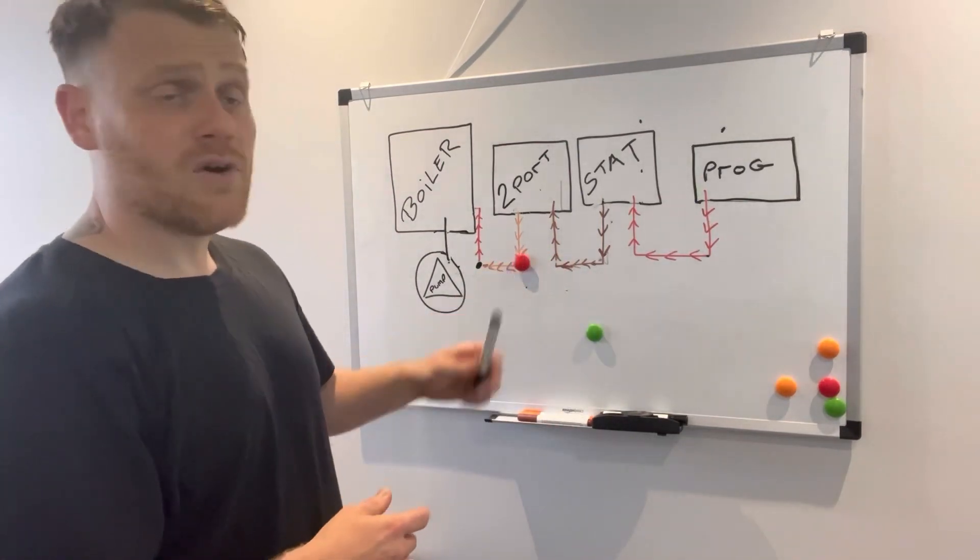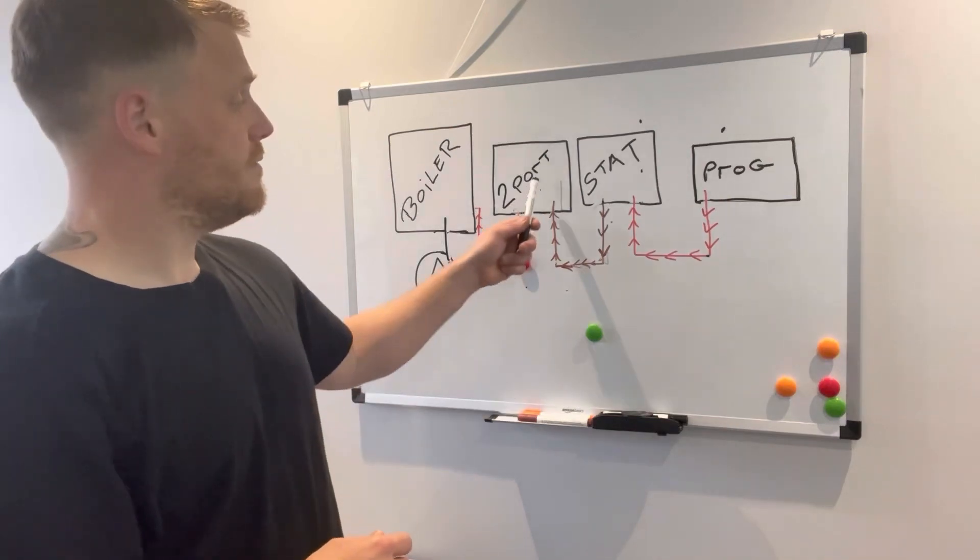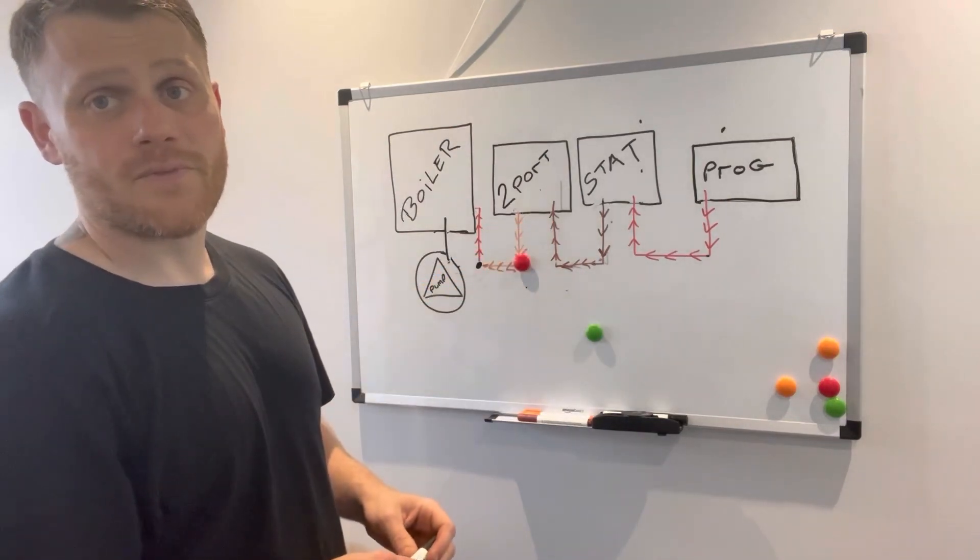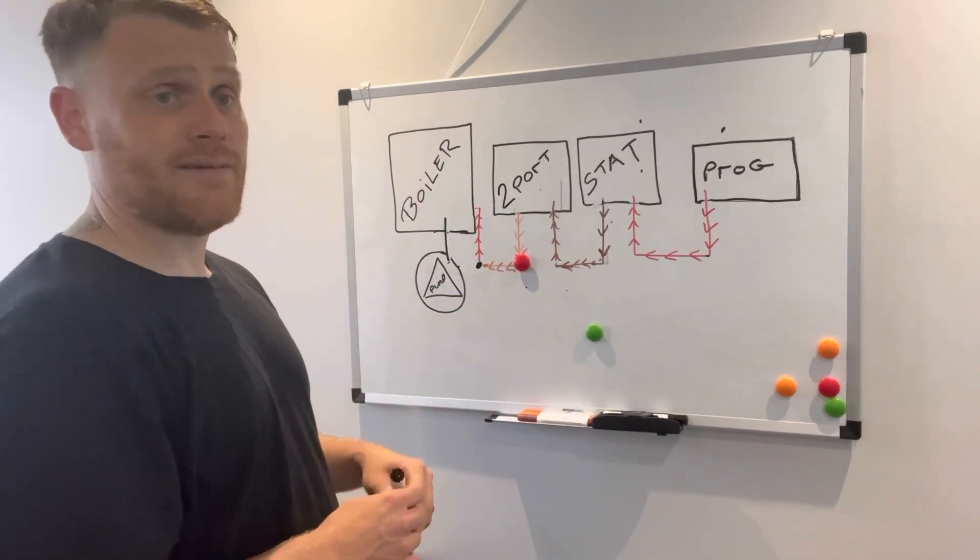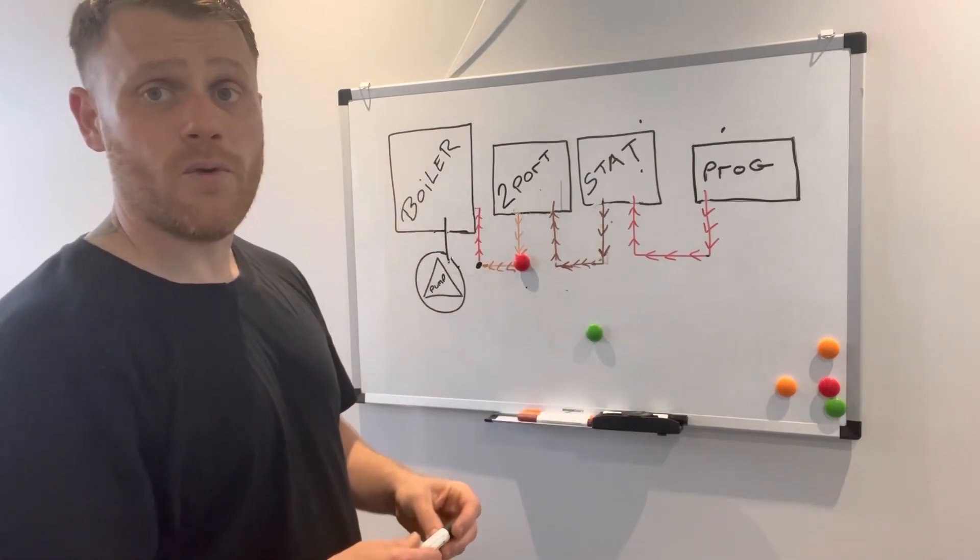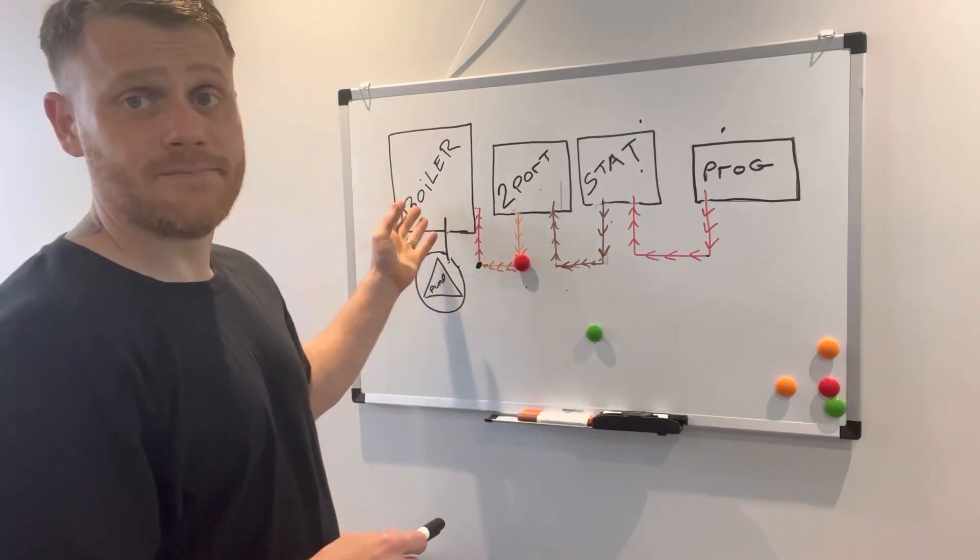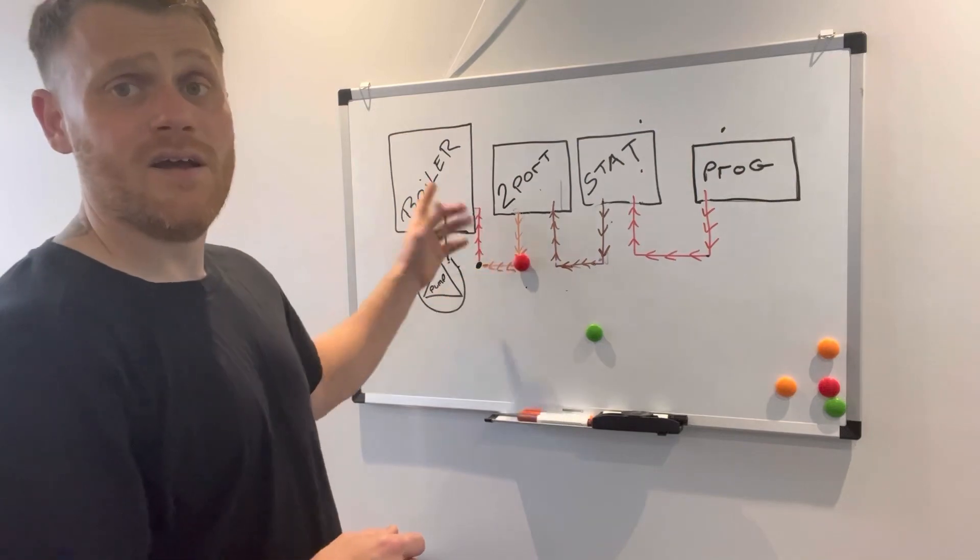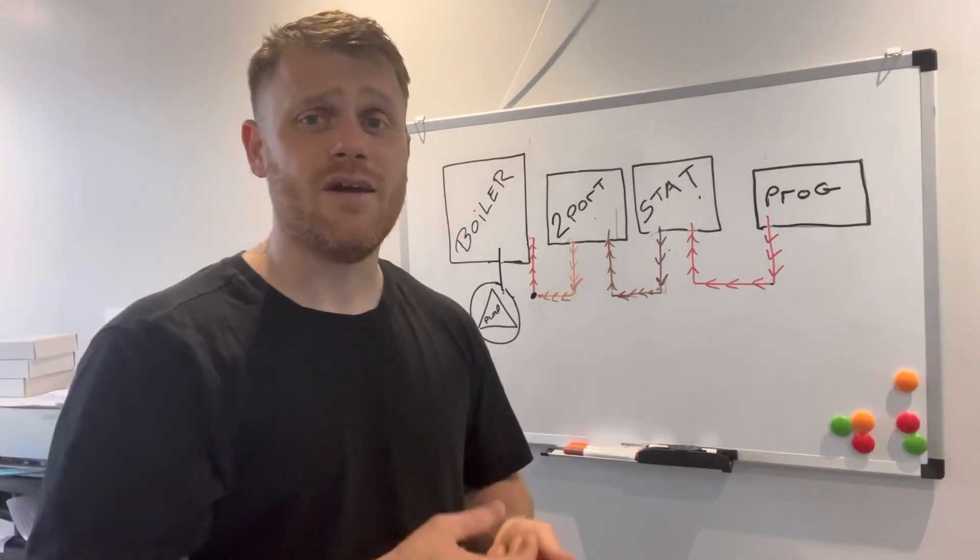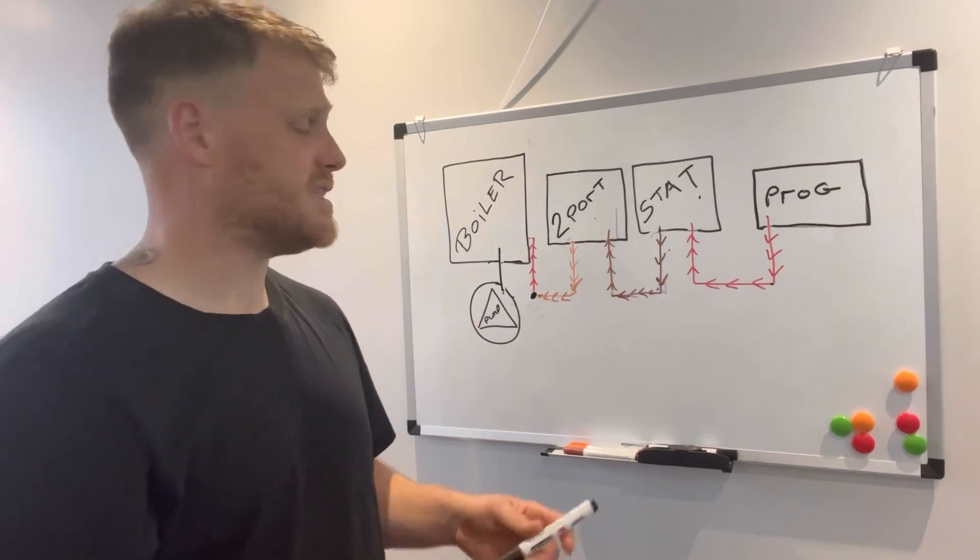Once I know I've got 240 on my brown, have I got 240 on my orange? If I haven't got 240 on my orange, I know then it's probably the two-port. If I have got 240 on my orange, then I know that there's something wrong with the boiler.